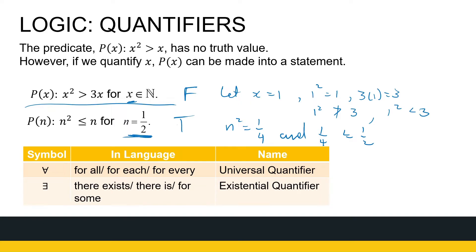To test more predicates we need what we call quantifiers — two symbols we use in mathematics. The upside-down capital A means 'for all,' 'for each,' or 'for every' — it's called the universal quantifier. The backwards capital E means 'there exists,' 'there is,' or 'for some' — it's called the existential quantifier. We'll use these quantifiers together with predicates to test whether statements are true or false.